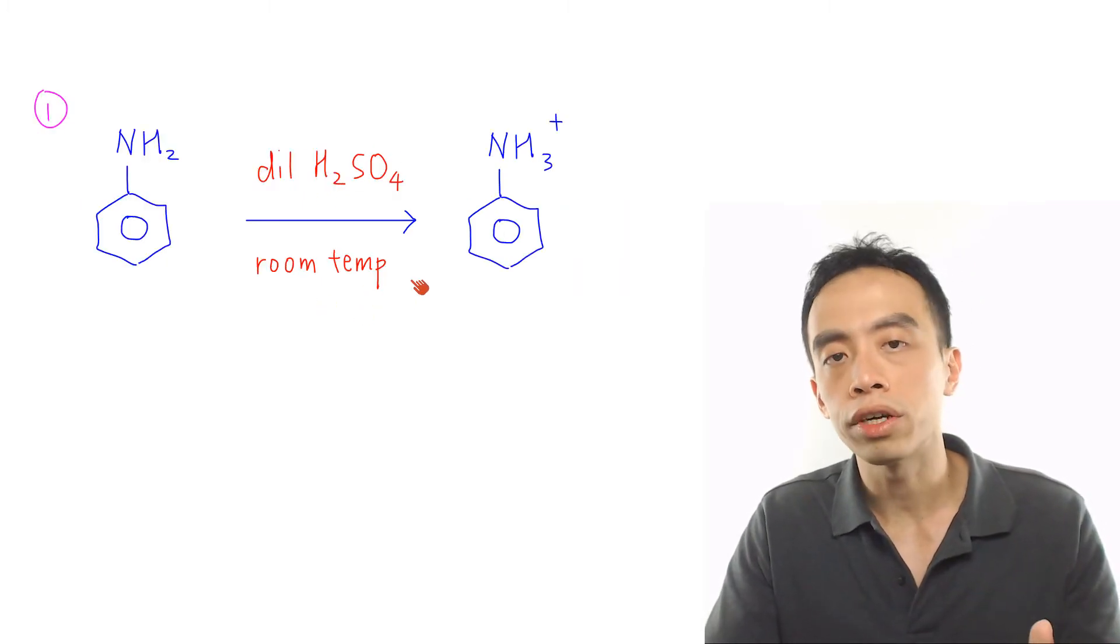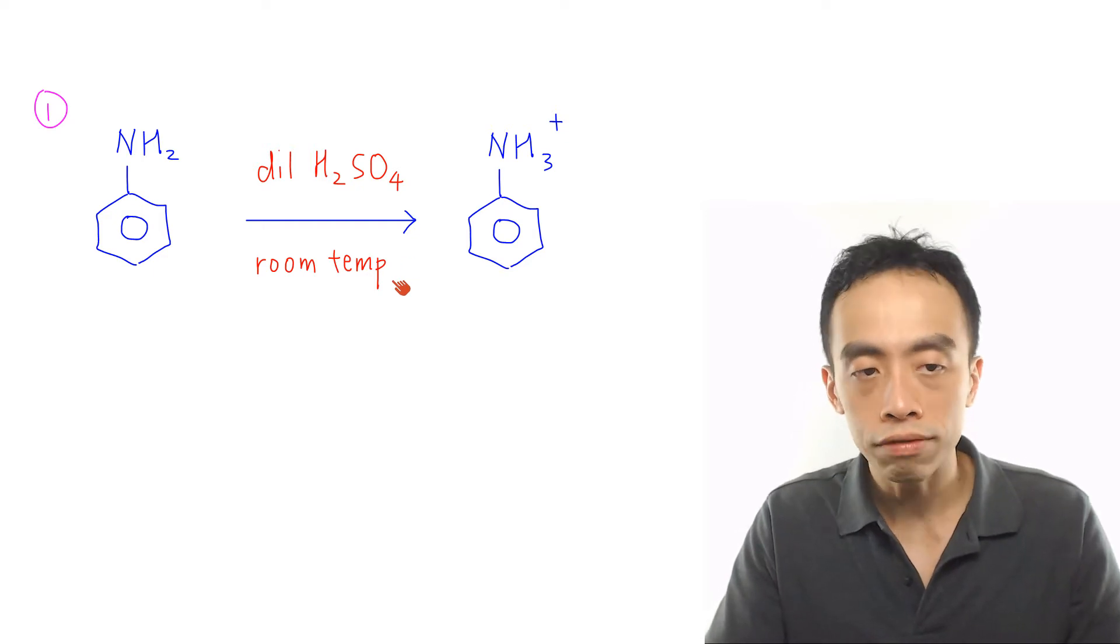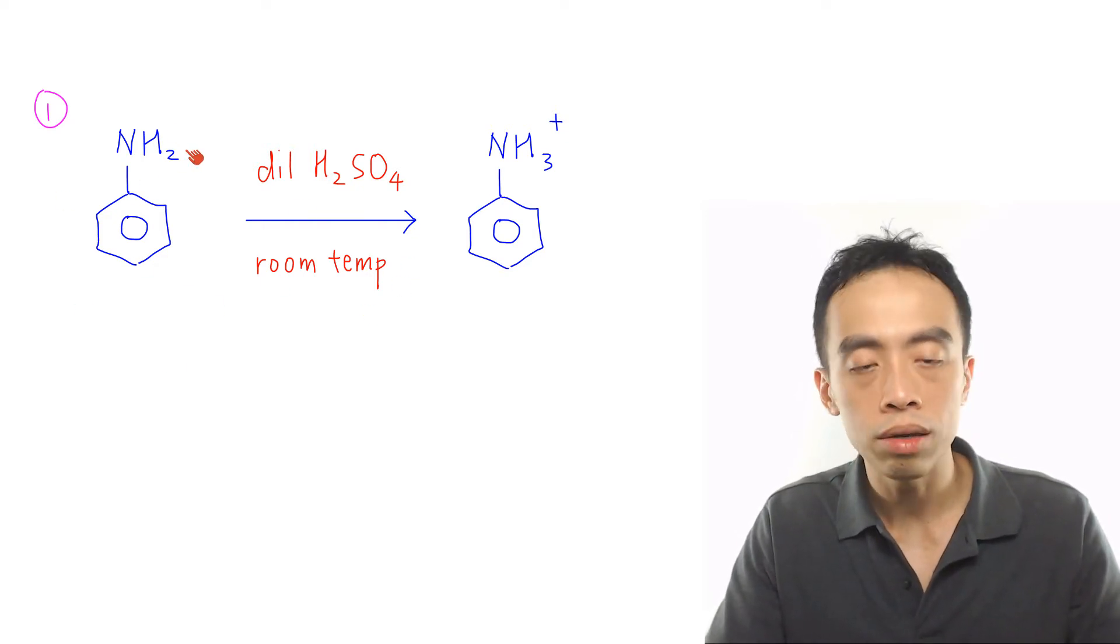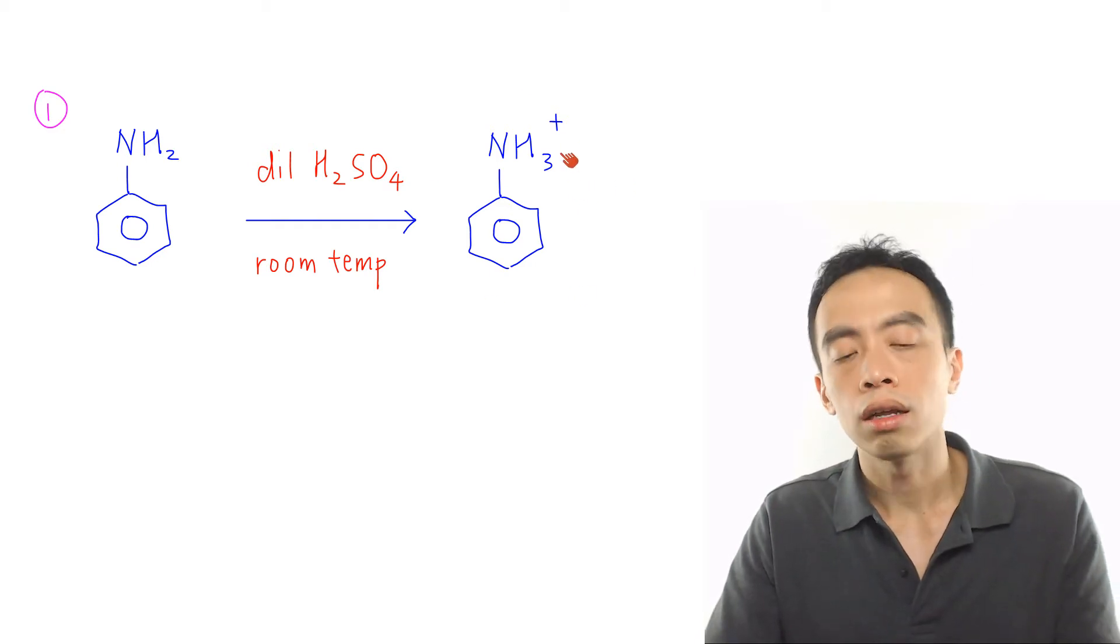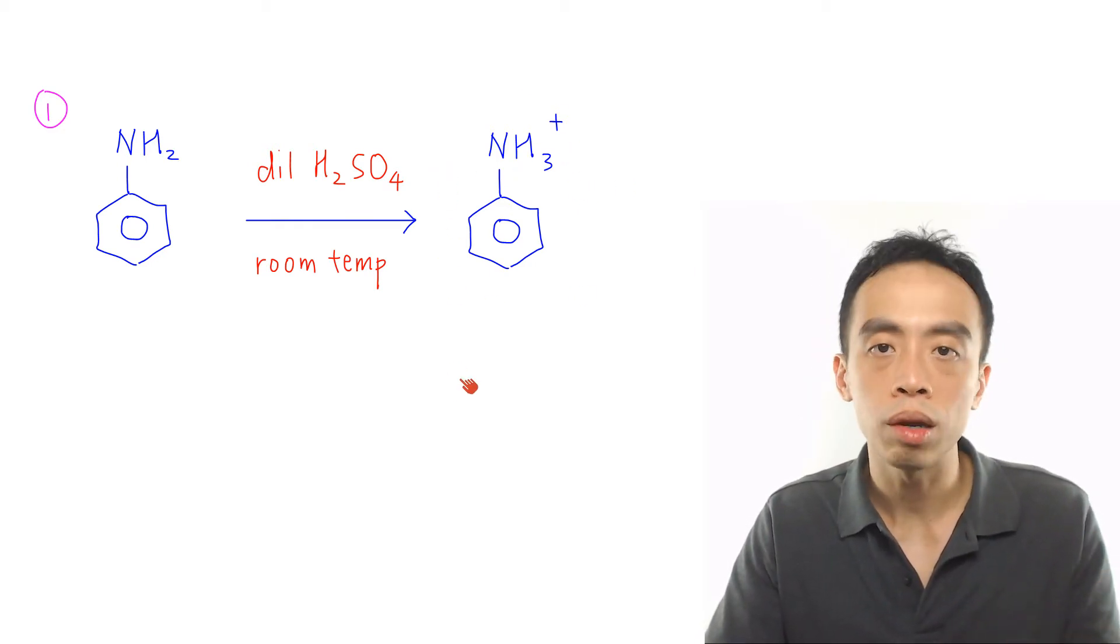Next, let's talk about the 3 reactions of phenyl amines. The first reaction of phenyl amine is the neutralization to form ammonium salt. This is done using dilute H2SO4 at room temperature.